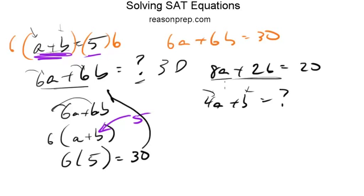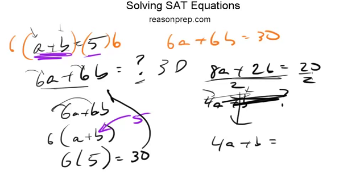okay, look at this. It's 8a plus 2b. Let's just divide both sides by 2. That will leave us on the left side with 4a plus b equals, on the right side, 10. And there you go, 4a plus b equals 10.